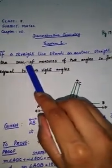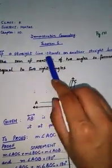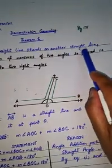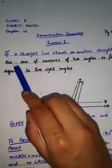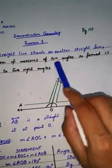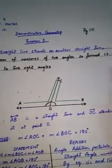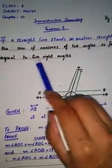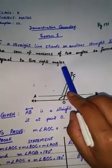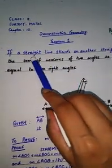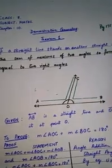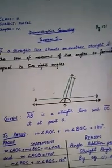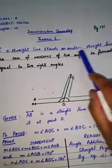So we will start with the statement. If a straight line stands on another straight line, then the sum of measures of two angles so formed is equal to two right angles. Now look very carefully at this statement. The first part of the sentence, that is before the comma in this whole statement, I have written with blue, and the next part I have written with black.